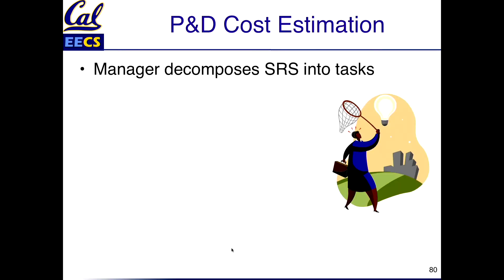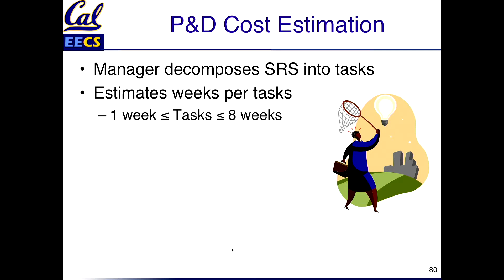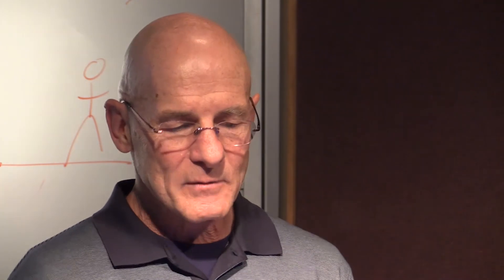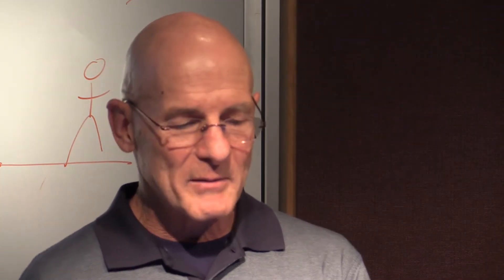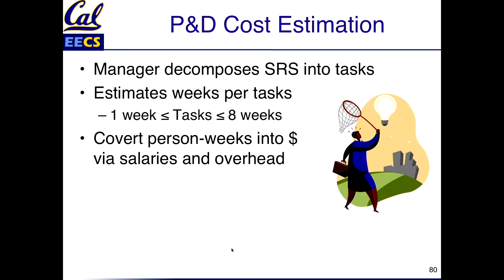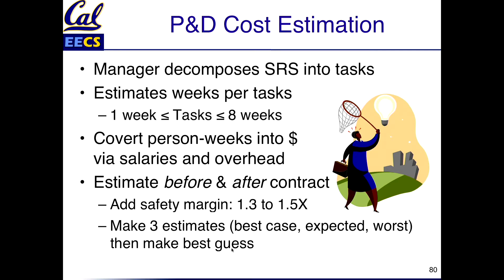How about cost estimation? The manager decomposes the software requirements specification into tasks — similar to points for user stories. You want to bound tasks between one and eight weeks: more than eight weeks is too big, less than one week is hard to schedule. Given the task estimates, you convert those into dollars via salaries and overhead. You do this before you get the contract and after — you want those cost estimates to be similar: what you bid to get it, and what it's going to cost the company to build it.